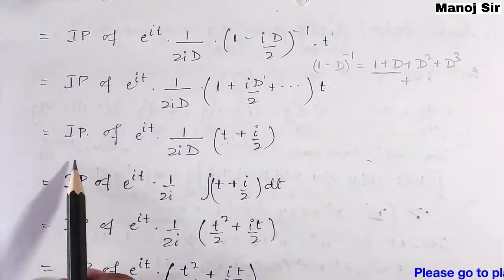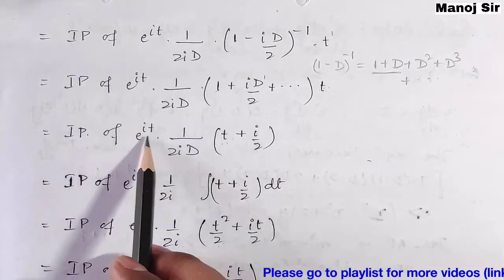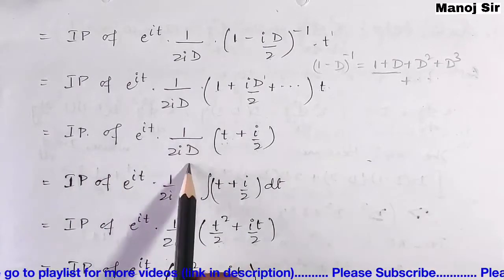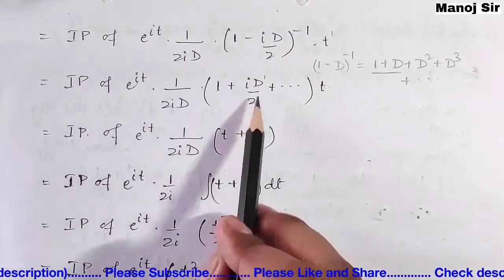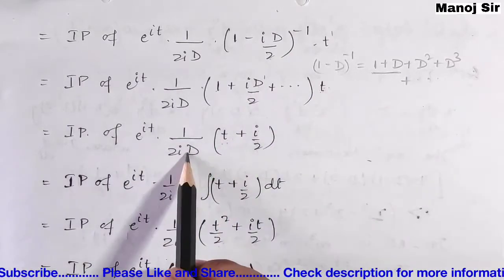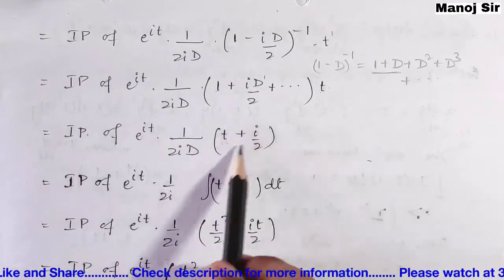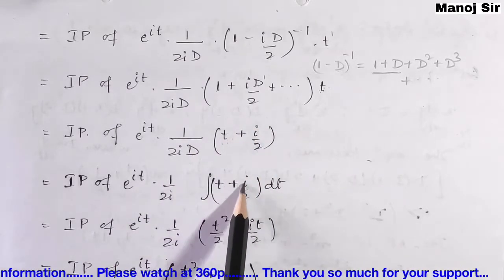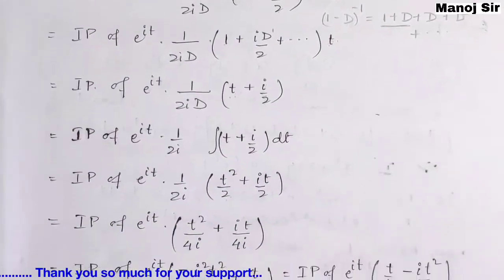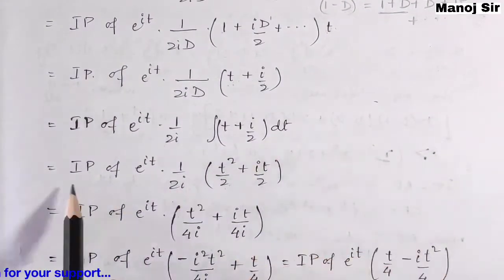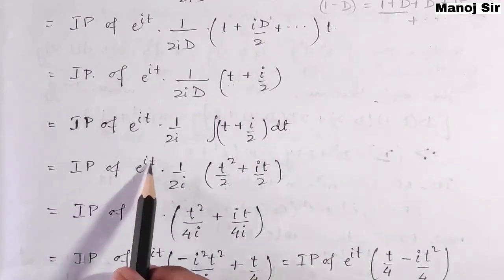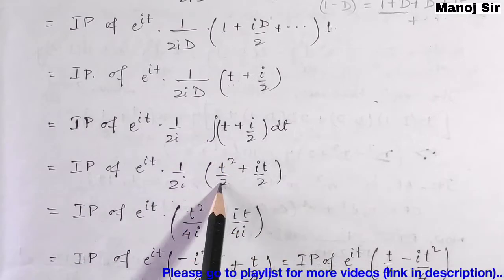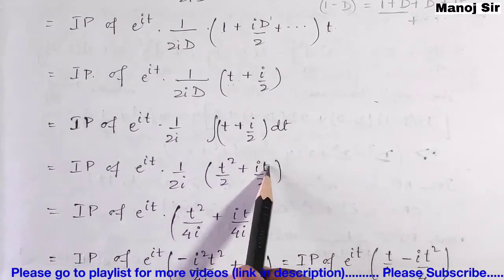Now 1/D means integration. We need to integrate (t + i/2) with respect to t. Imaginary part of e^(it) · 1/(2i) · [t²/2 + (i/2)t]. Taking 1/(2i) inside the bracket gives imaginary part of e^(it) · [t²/4i + it/(4i)].